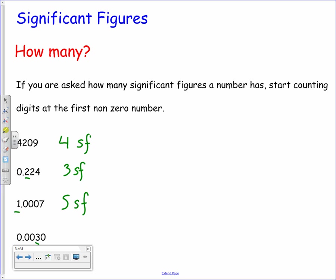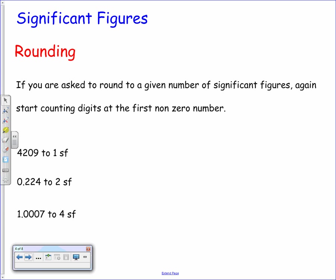Similarly for the last one, 0.0030 — we'll start counting at the three because that's the first non-zero digit. But then it's immediately followed by another zero, and that zero at the end does give us an idea about the accuracy of the number, so therefore it has two significant figures.